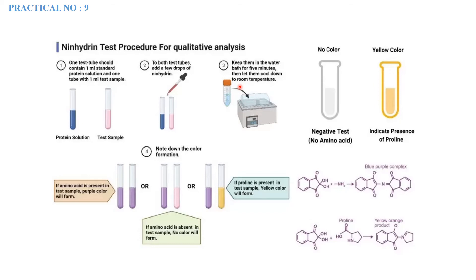After heating for five minutes in the water bath, allow the test tubes to cool down at room temperature. Then note the color formation. If an amino acid is present in the test sample, a purple color will form. If amino acids are absent, purple color will not appear in the control group without protein.